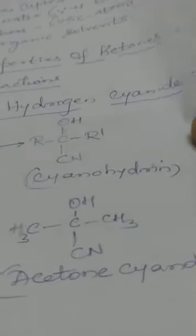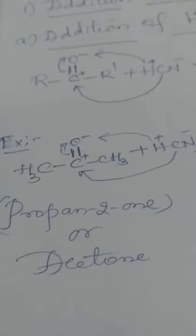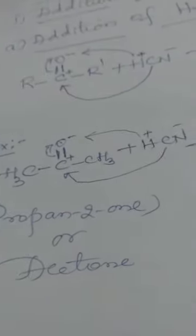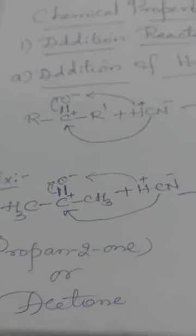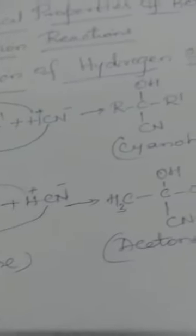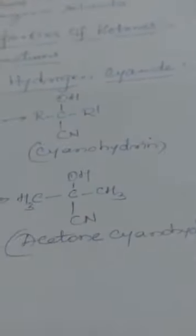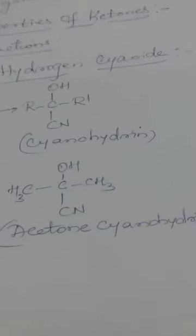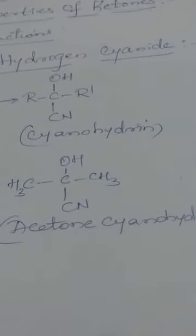Ketones react with hydrogen cyanide to form cyanohydrins. Taking the example of propan-2-one (acetone) reacting with HCN — the product formed is acetone cyanohydrin: CH3-C(OH)(CN)-CH3. This is the first addition reaction.